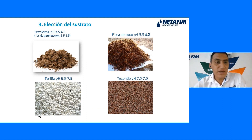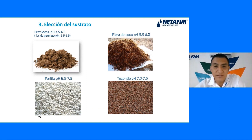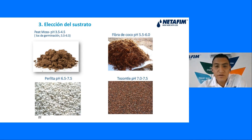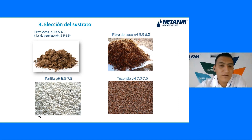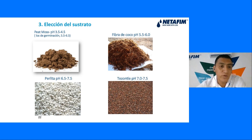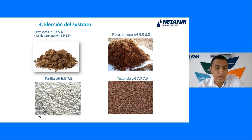Es importante tener una buena elección del sustrato. Hay diferentes tipos: el peat moss tiene un pH de 3.5 a 4.5; la fibra de coco, de 5.5 a 6; perlita, de 6.5 a 7.5; y tezontle, de 7 a 7.5. Cuando metemos fibra de coco con pH más alto y necesitamos un pH más bajo — por ejemplo para arándano — necesitamos hacer lavados con calcio para bajarlo más rápido.